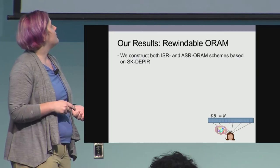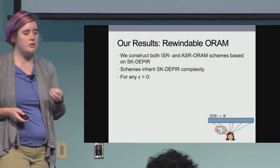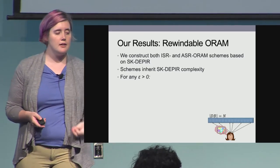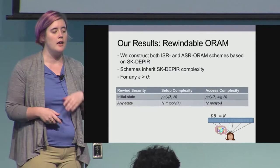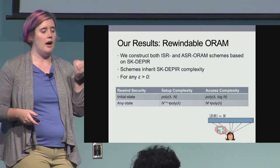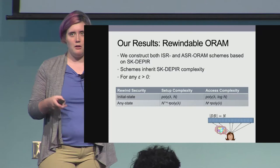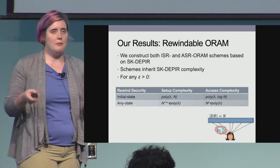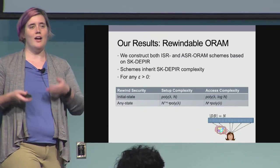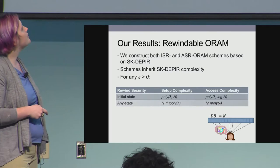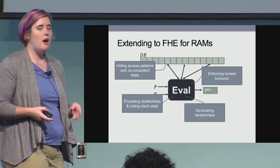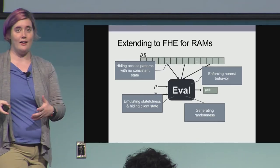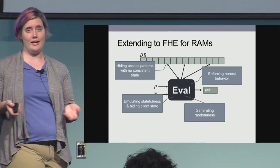In terms of results, we are able to construct ISR and ASR ORAM schemes based on secret key D-PIR. The schemes inherit the secret key D-PIR complexity: initial state is polylog in the size of the database; any state is slightly more complicated but not much. We are able to use this primitive within our FHE construction. We have essentially tackled the access pattern problem by showing that state consistency does not matter, so we do not need to maintain a consistent state.